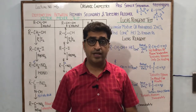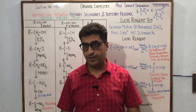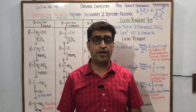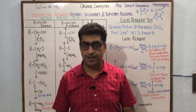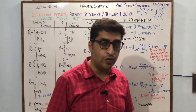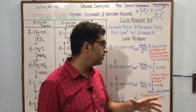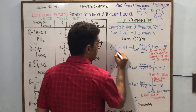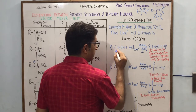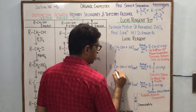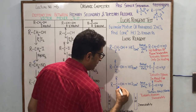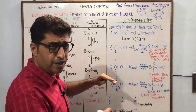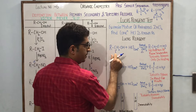The second important test to distinguish primary, secondary, and tertiary alcohols is the Lucas reagent test. Lucas reagent is an equimolar mixture of anhydrous zinc chloride and concentrated HCl. In this case we start with three types of alcohols: the first is primary alcohol, the second is secondary alcohol, and the third is tertiary alcohol.